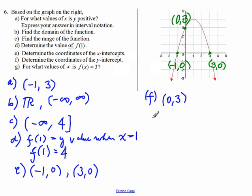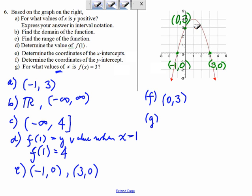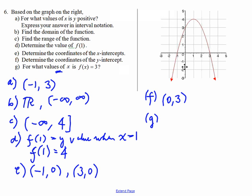Part G. For what values — plural, there are more than one x value — for what values of x is f of x equal to 3? This question can be restated this way: the y value is 3. What are the corresponding x values?